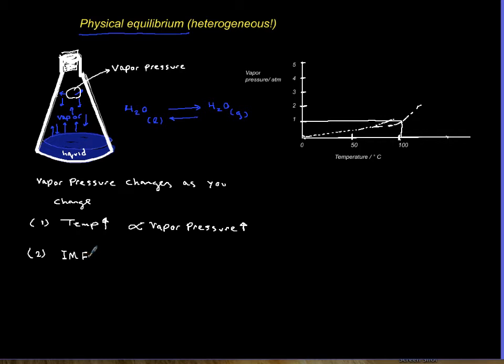If you have hydrogen bonding versus, for example, Van der Waals, as IMF goes up, vapor pressure actually goes down. So the molecules are strongly held, and they're not going to turn into gases. So IMF goes up, vapor pressure goes down.